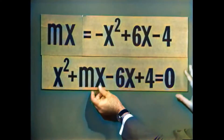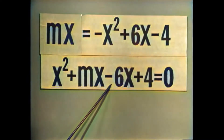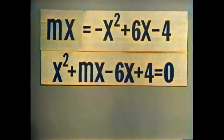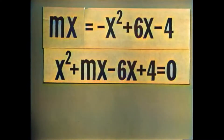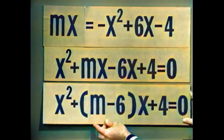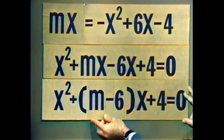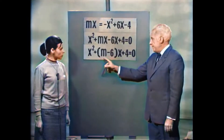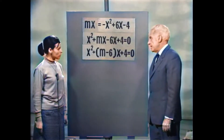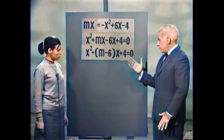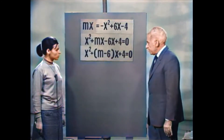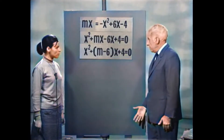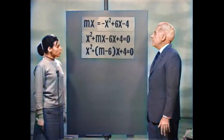אפשר להביא את זה לצורה פשוטה יותר — נוציא x מחוץ לסוגריים ונקבל: x בריבוע פלוס (M מינוס 6) כפול x פלוס 4 שווה 0. עכשיו אנחנו שואלים: בשביל איזה ערכים של M יהיו שני פתרונות, פתרון אחד כפול, או אין פתרון בכלל?